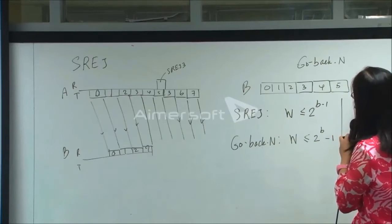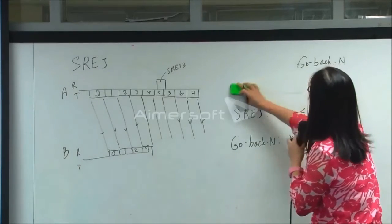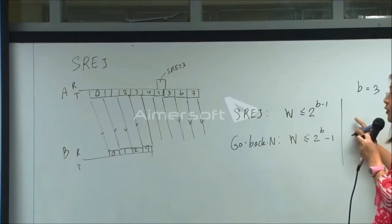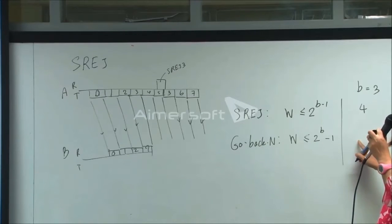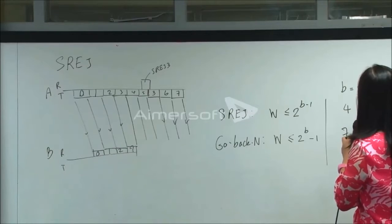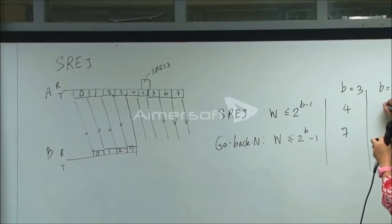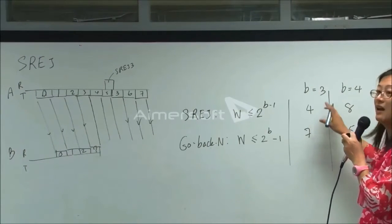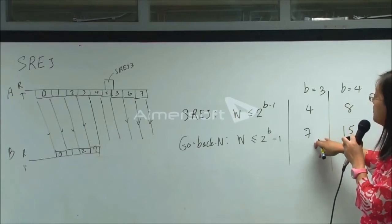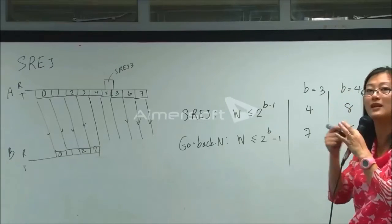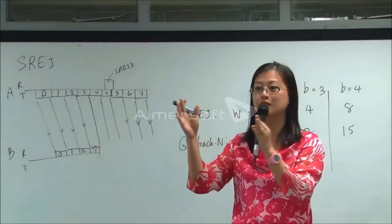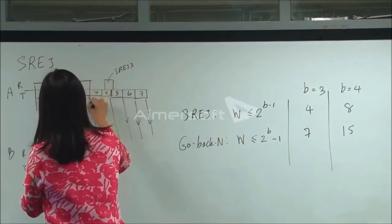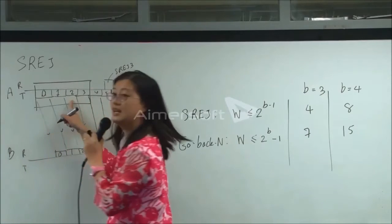For example, if B equals 3: the selective reject window size is 4, while the go-back-N window size is 7. If B equals 4: selective reject gives 8 and go-back-N gives 15. So the selective reject window is roughly a little more than half the go-back-N window. Since the window size is fixed, for selective reject with B equal to 3 your window size would be 4.